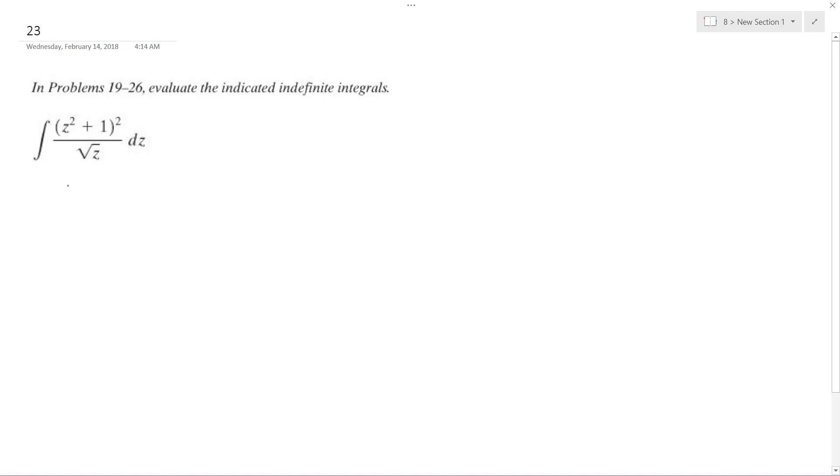So first thing I'm going to do though is multiply out the numerator so I get z to the fourth plus z squared plus z squared. And then I get plus one all over the square root of z or z raised to the one half. The reason I did this is because it will be easier to just see what to do. So z to the fourth plus two z to the second plus one all over z to the one half.